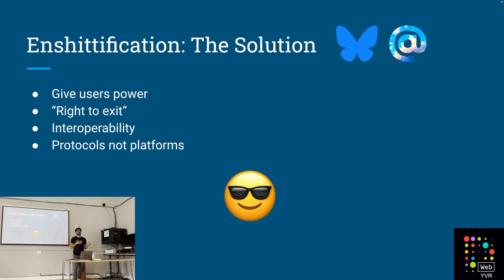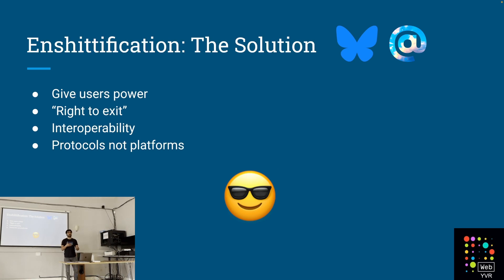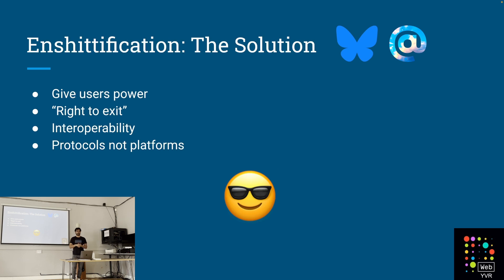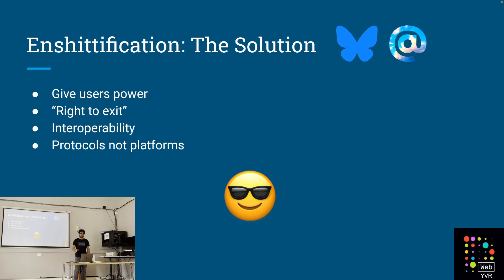A recent example of the consequences of enshittification is the transition from Twitter to X. A lot of people had built up their businesses on Twitter — their income or their livelihood depended on their audience — and then all of a sudden the platform completely changed and many people could no longer use it for that livelihood. BlueSky and the underlying AT Protocol is a way for people to not get locked into one company and the decisions they make about how they engage with the social web.